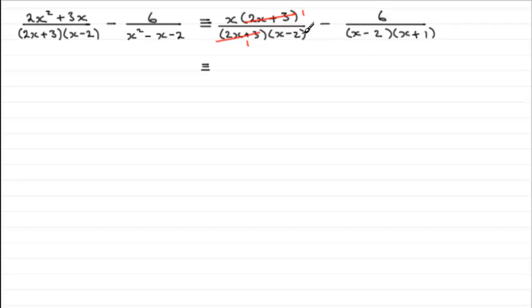Well, we can see that if we were to take our first term x over x minus 2, then we can create exactly the same denominator as this one if we multiply top and bottom by x plus 1.